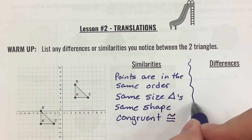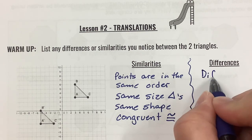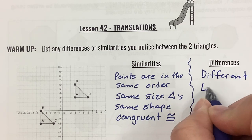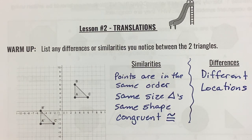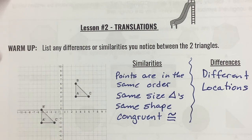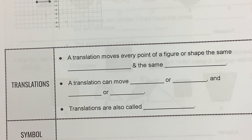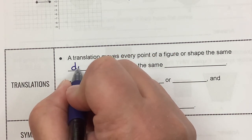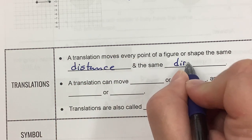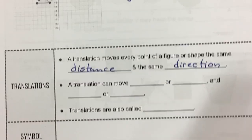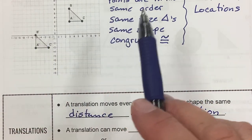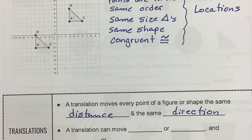Now, what about some differences? Well, they're in different locations. Honestly, I think that's the only difference — the location. A translation moves every point of a figure or shape the same distance in the same direction. They're also called slides.